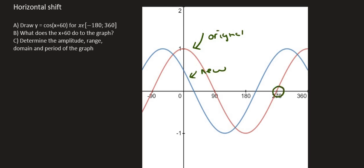So every single point has been moved. So for example, this point which is on the original is now over here. This point here is now over there. This point here has been moved over there. This point here. So you can see that every single point has been moved 60 degrees to the left. Thanks for watching.